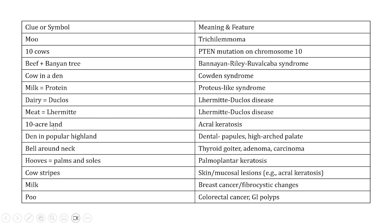The cow lived in a 10-acre land — acral keratosis. The den was in popular highland: den for dental manifestation, popular for papules, high for high-arched palate. The bell around its neck — thyroid cancer, goiter, and adenoma. Hoops on palms and soles — palmoplantar keratosis. Stripes on the back — skin and mucosal lesions including acrokeratosis. Cow's milk — breast cancer or fibrocystic changes. And the poo — colorectal cancer and GI polyps.